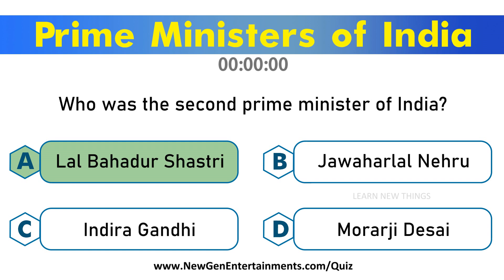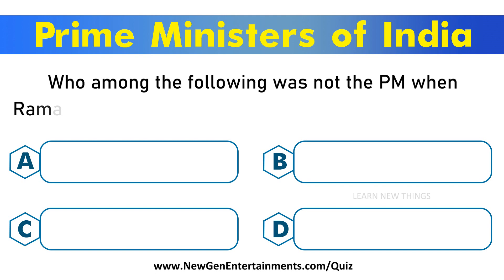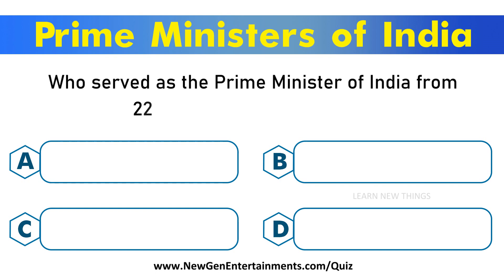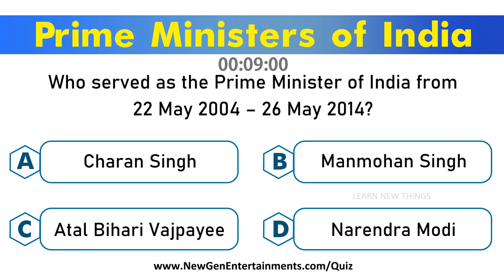Who among the following was not the PM when Ramaswamy Venkataraman was the President of India? Options are A. Vishwanath Pratap Singh, B. Chandrashekhar, C. P.V. Narasimha Rao, D. H.D. Deve Gowda. Answer is Option D. H.D. Deve Gowda.